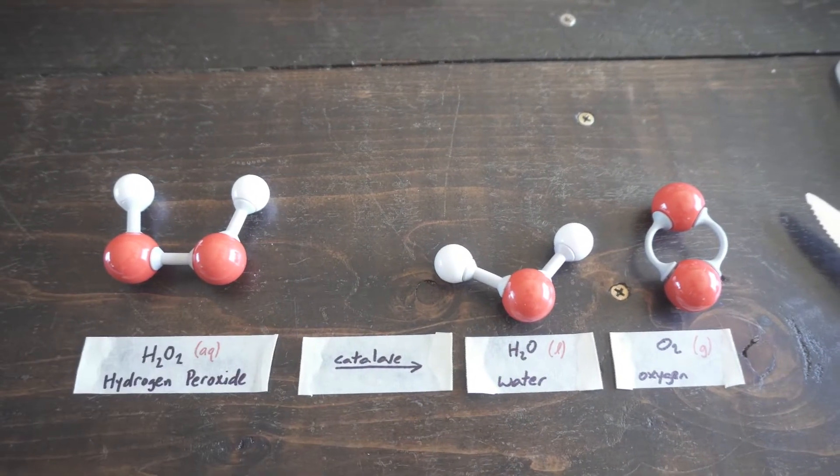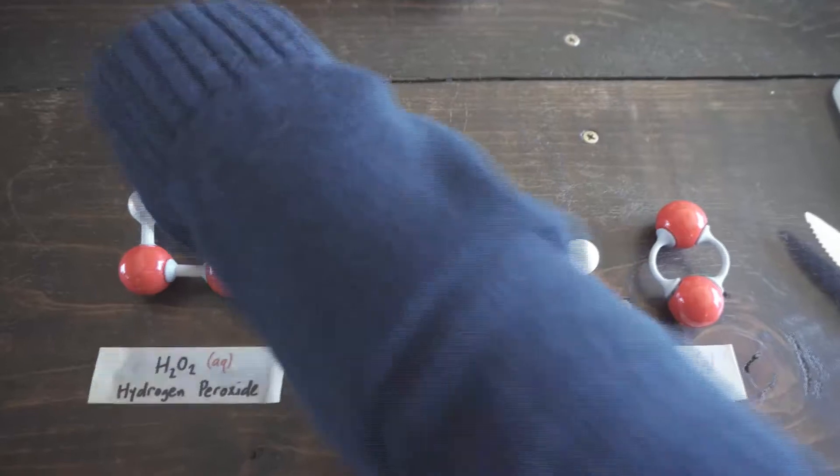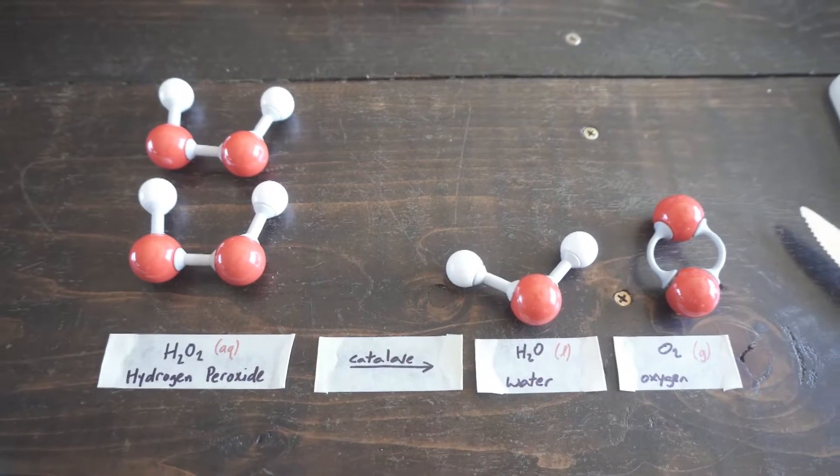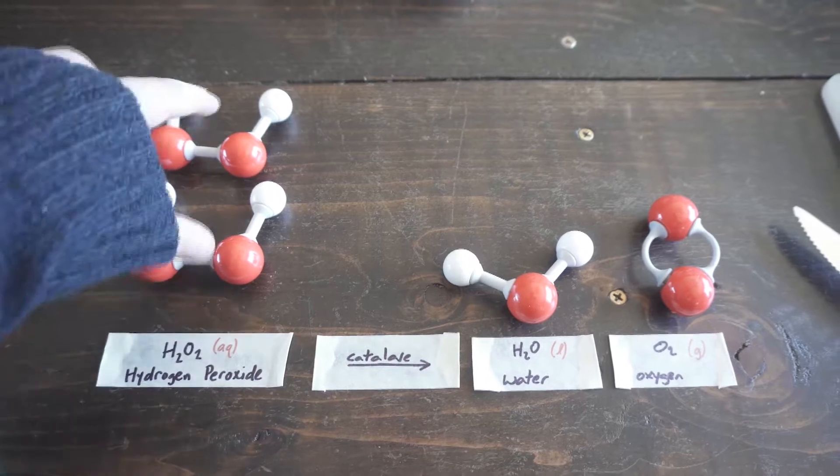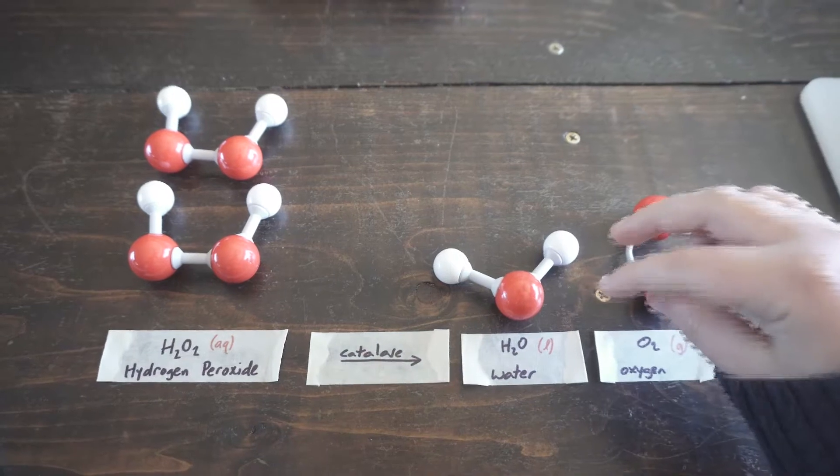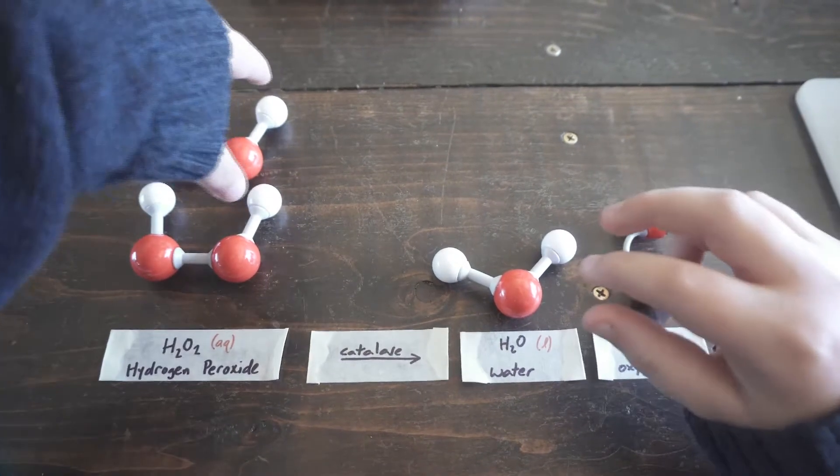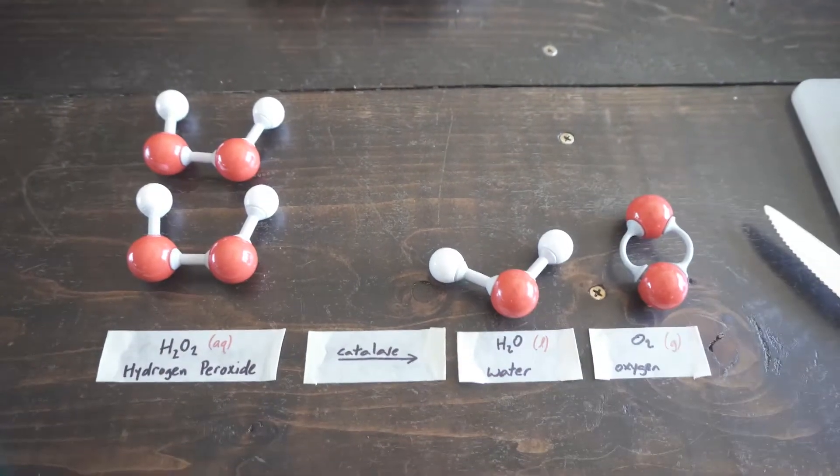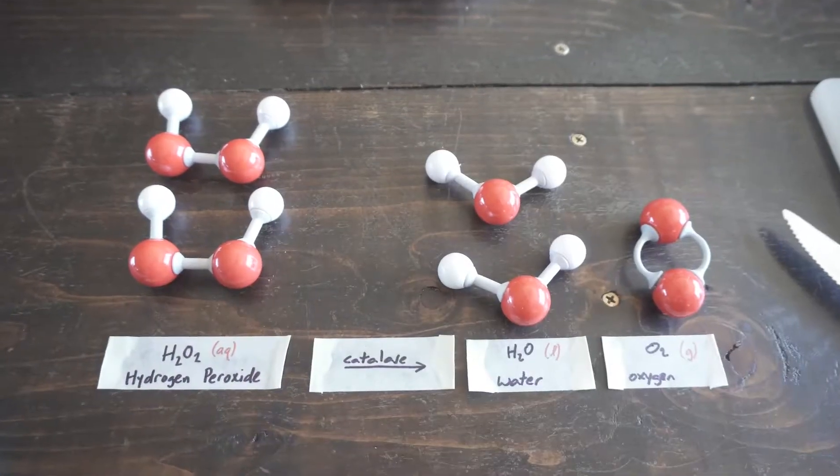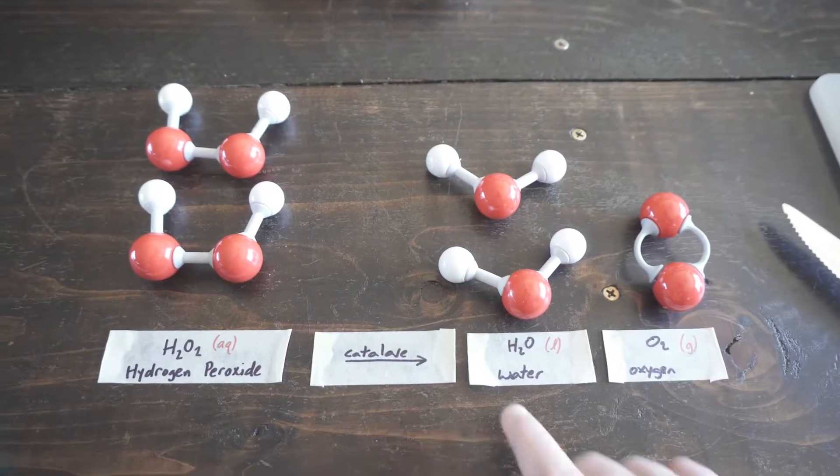So in order to balance that out we are going to need to bring in another hydrogen peroxide molecule, but now we have four oxygen atoms and three oxygen atoms on either side of the equation but only four hydrogen atoms but only two over here.